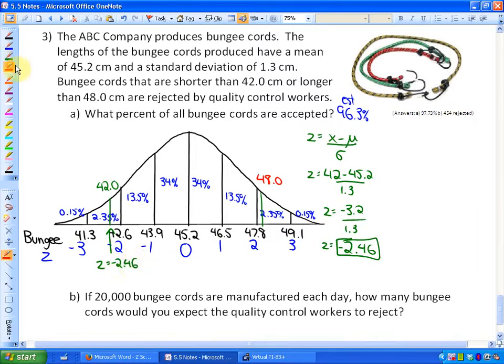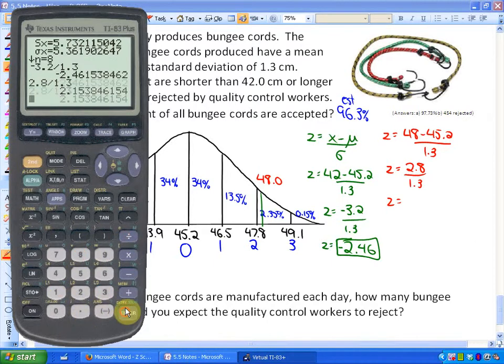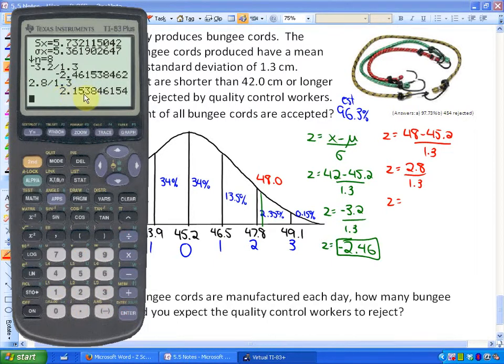As far as the Z-score for 48, let's do the same thing. The Z-score would be 48 minus the mean, which is 45.2, all over the standard deviation. So if I was to simplify this, it's roughly 2.8 divided by 1.3. And as you can see, that's roughly 2.15. So this Z-score here is roughly 2.15.